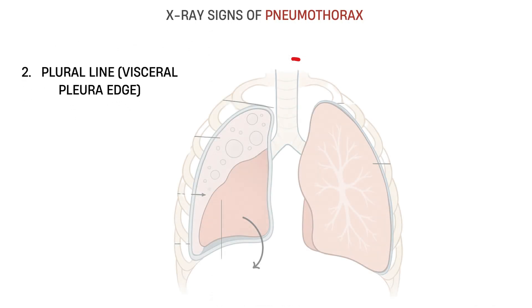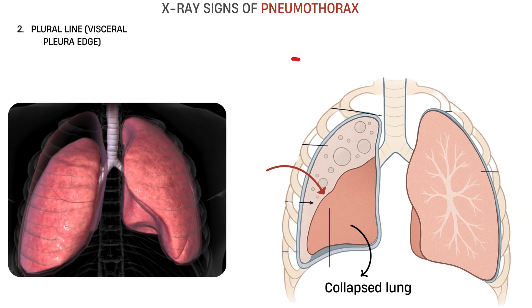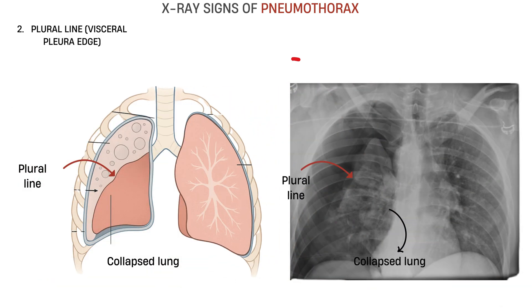Next, the pleural line. As the lung collapses, the edge of the lung becomes visible. This appears as a fine, sharp, white line — that's the visceral pleura. Beyond this line, you see nothing: just blackness. No vessels, no bronchi, just air. This is your classic lung edge, and it's a definitive sign. If you see a white line not connected to ribs or heart, and beyond it is black, it's not normal lung — it's free pleural air.